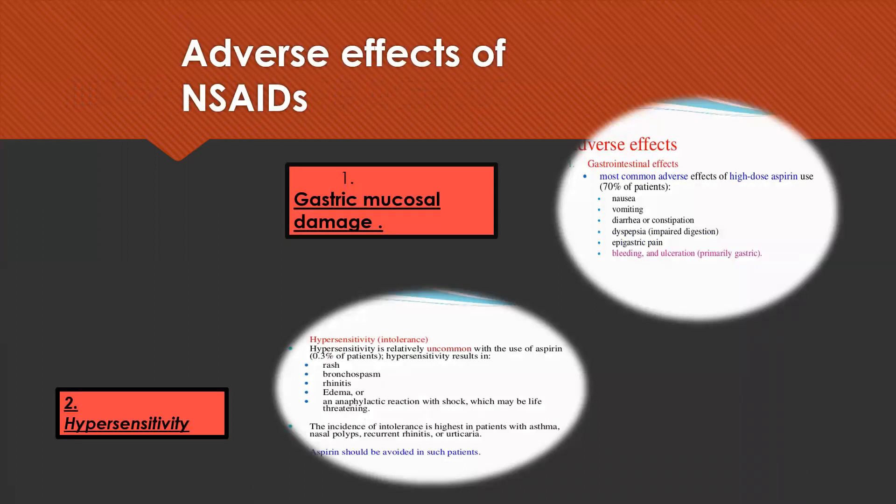Since all NSAIDs except selective COX-2 inhibitors inhibit the synthesis of prostaglandins, there are certain adverse effects. The most common adverse effect is gastric mucosal damage, manifesting as nausea, vomiting, diarrhea or constipation, dyspepsia, epigastric pain, and bleeding and ulceration — mostly seen with high dose aspirin. To minimize these effects, NSAIDs are taken after meals or with food. Drugs such as misoprostol, sold under the brand name Cytotec, can be used to prevent gastric ulceration.